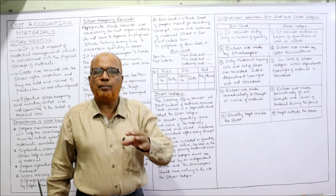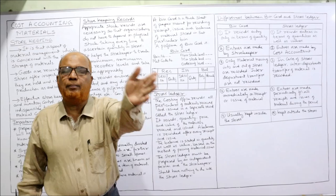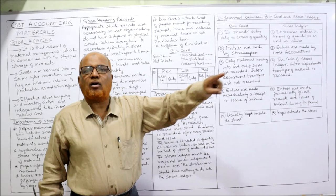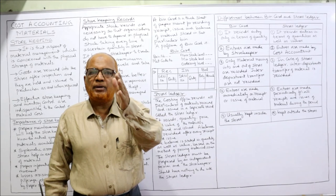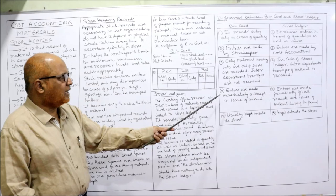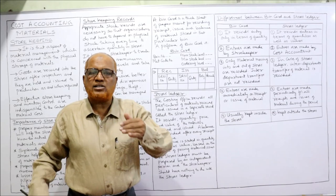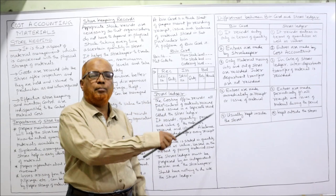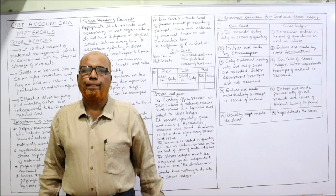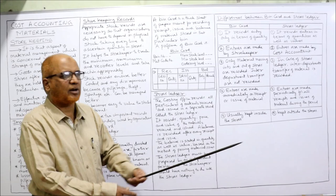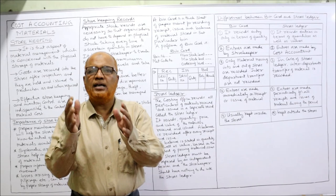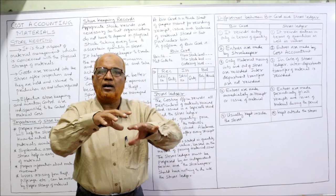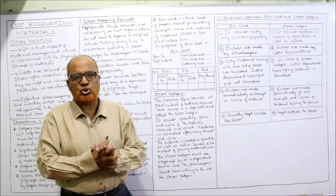Third, in the bin card only material moving into and out of stores is recorded; inter-department transfers are not recorded. In the stores ledger, inter-department transfers — material transferred from one department to another internally — are recorded. Fourth, entries in the bin card are made immediately on receipt or issue of material, whereas in the stores ledger entries are recorded periodically — for example after every three days or one week. Fifth, the bin card is kept inside the stores, whereas the stores ledger is kept in the cost accounting department.